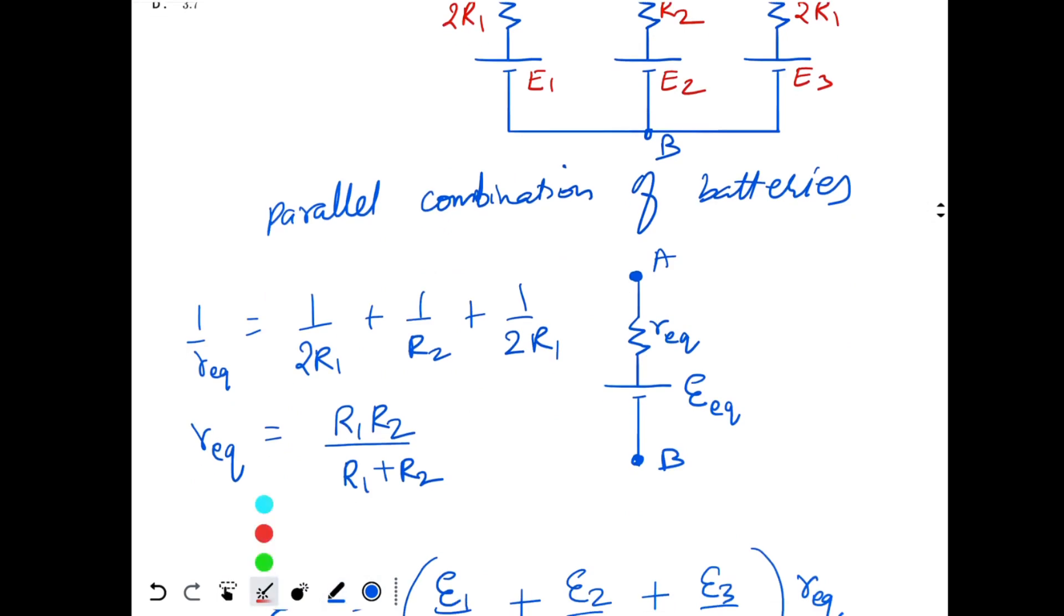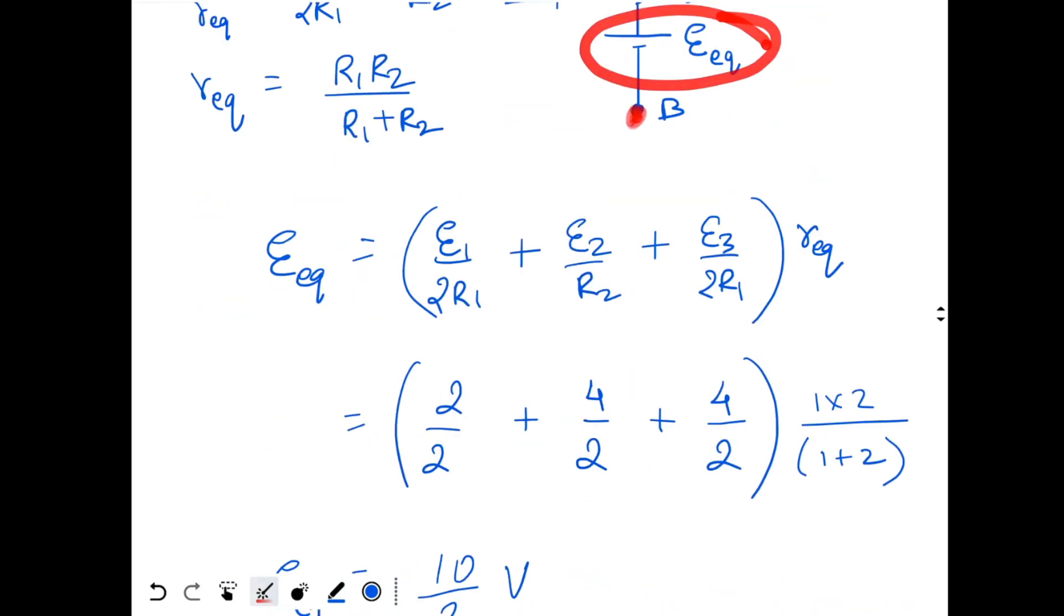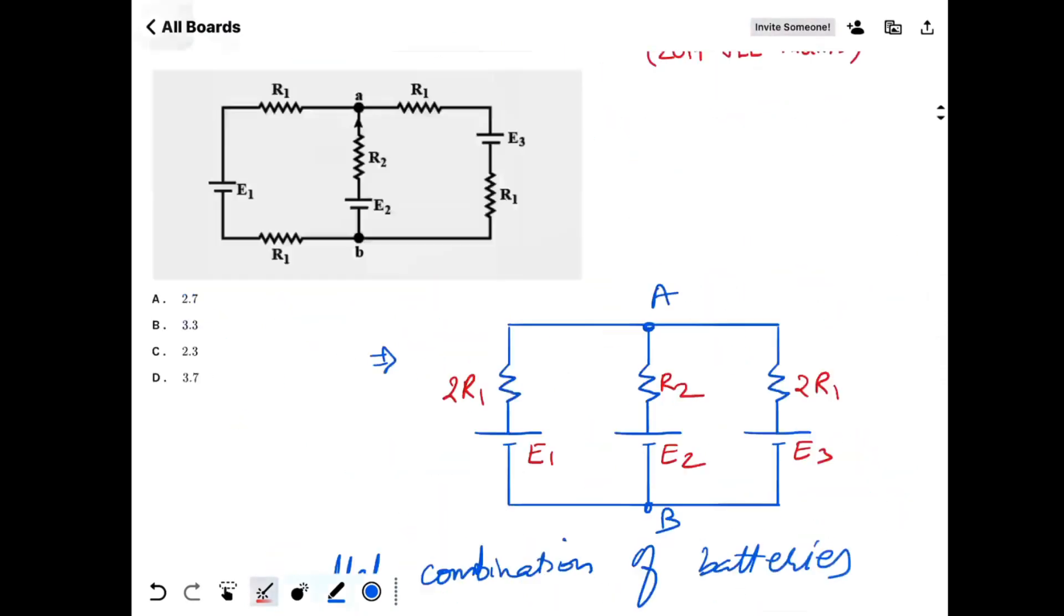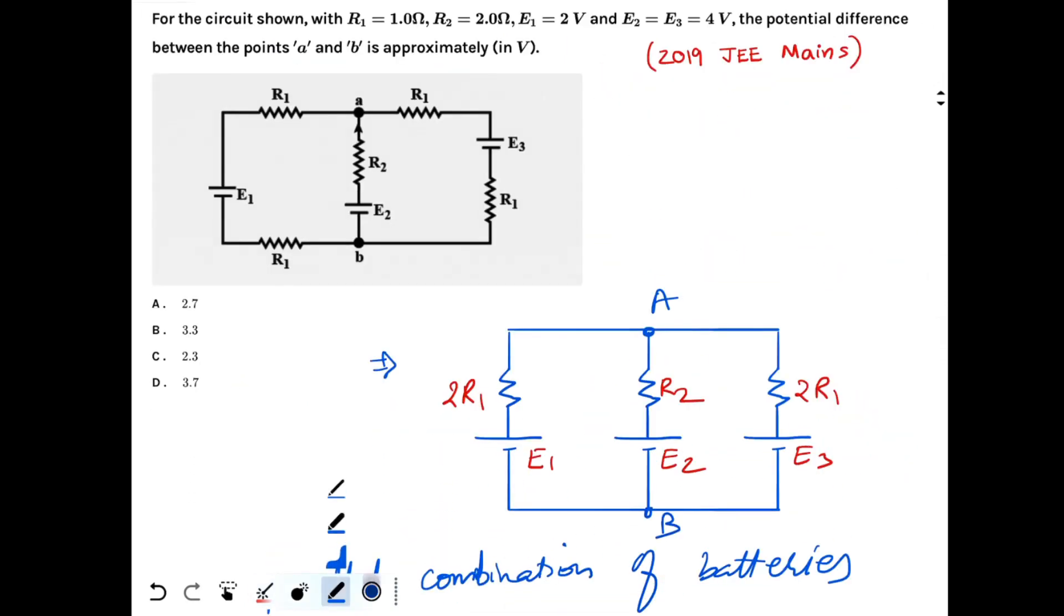Now in this circuit, since the two terminals are open, there is no current flowing through this battery. So the potential difference across the ends A and B will be equal to the equivalent EMF, which is 10 by 3 or 3.33. So the correct answer here will be option B.